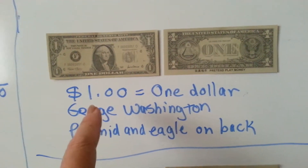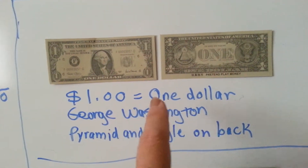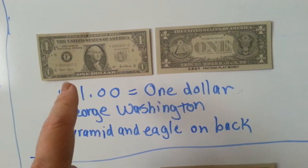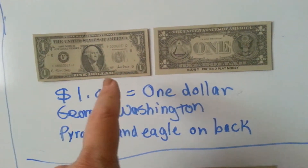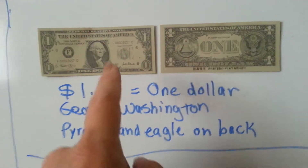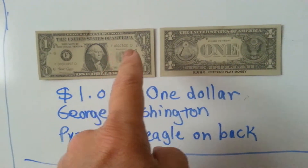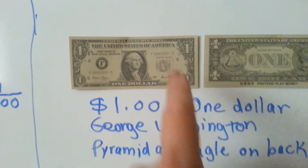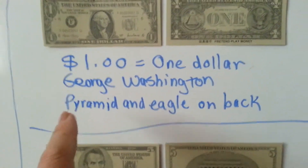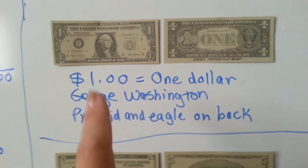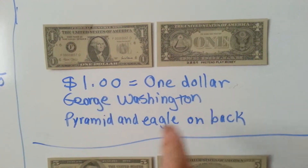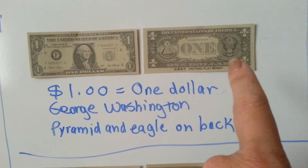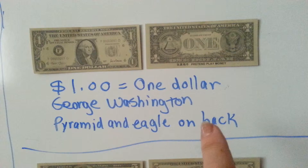This is a dollar, one dollar. It's got ones in the corners, and says one dollar down here. They have a number on them to identify them, and it's got a picture of George Washington on the front, and a pyramid with an eye and an eagle on the back.